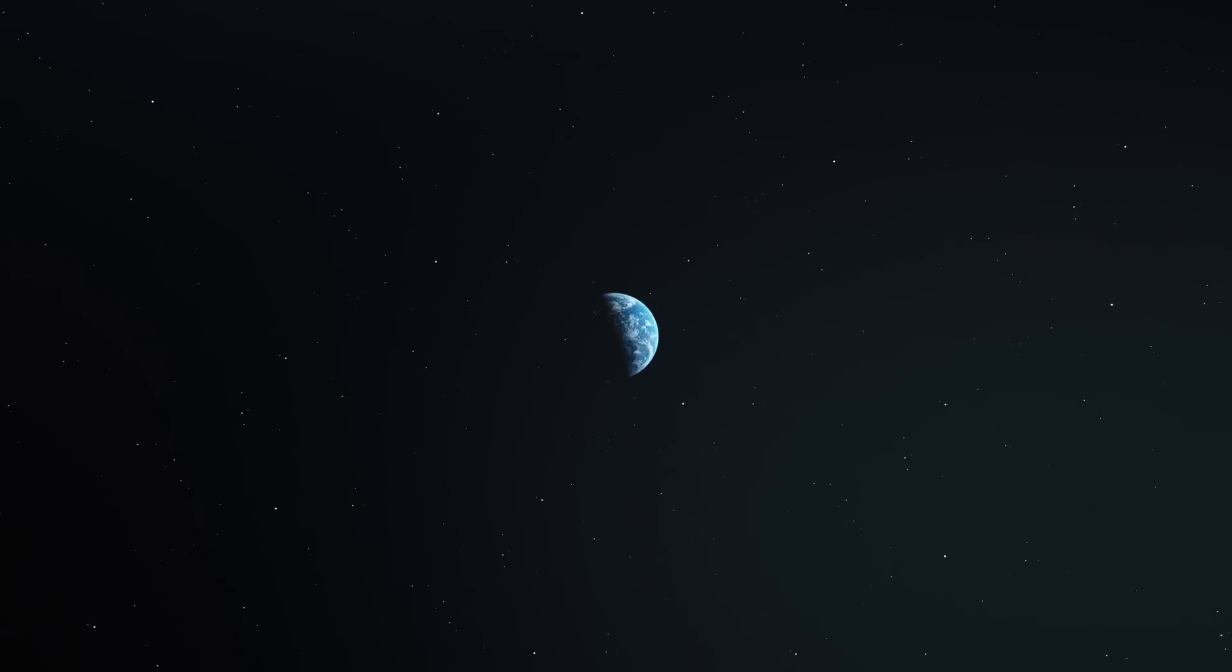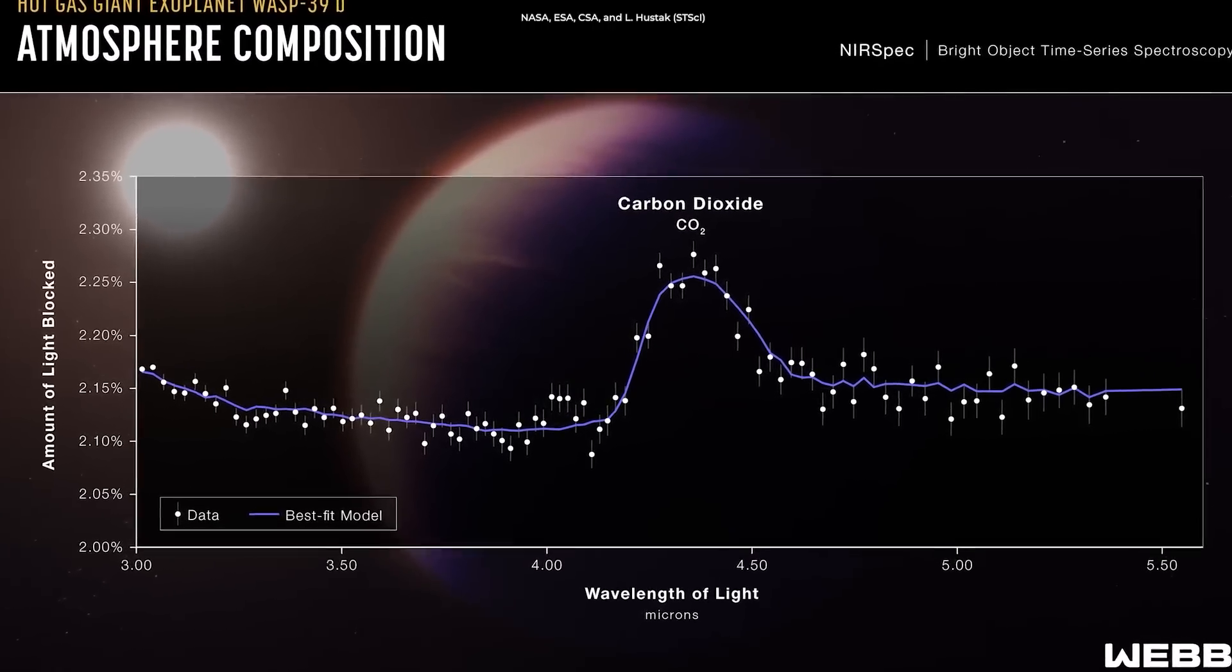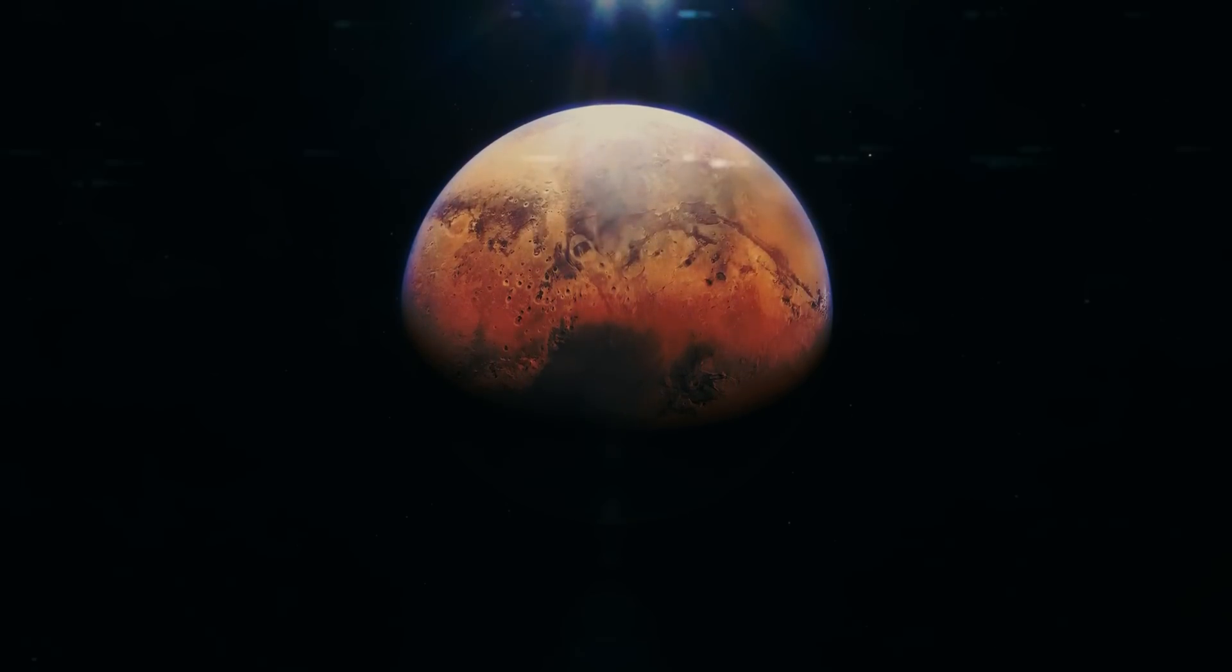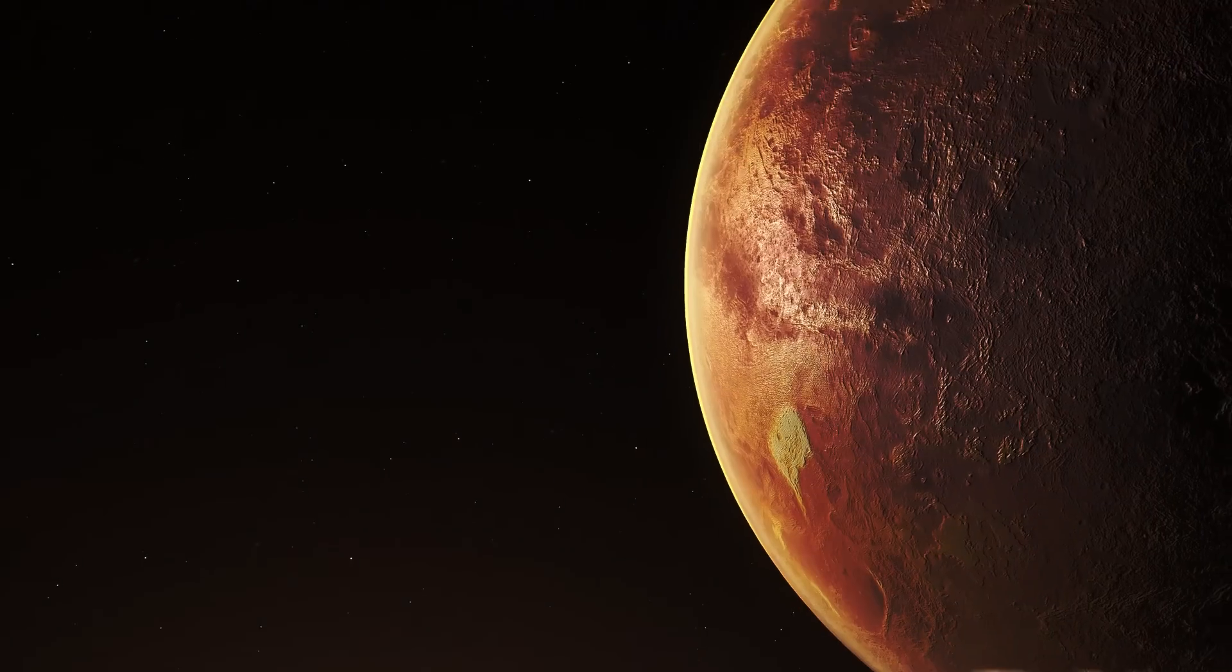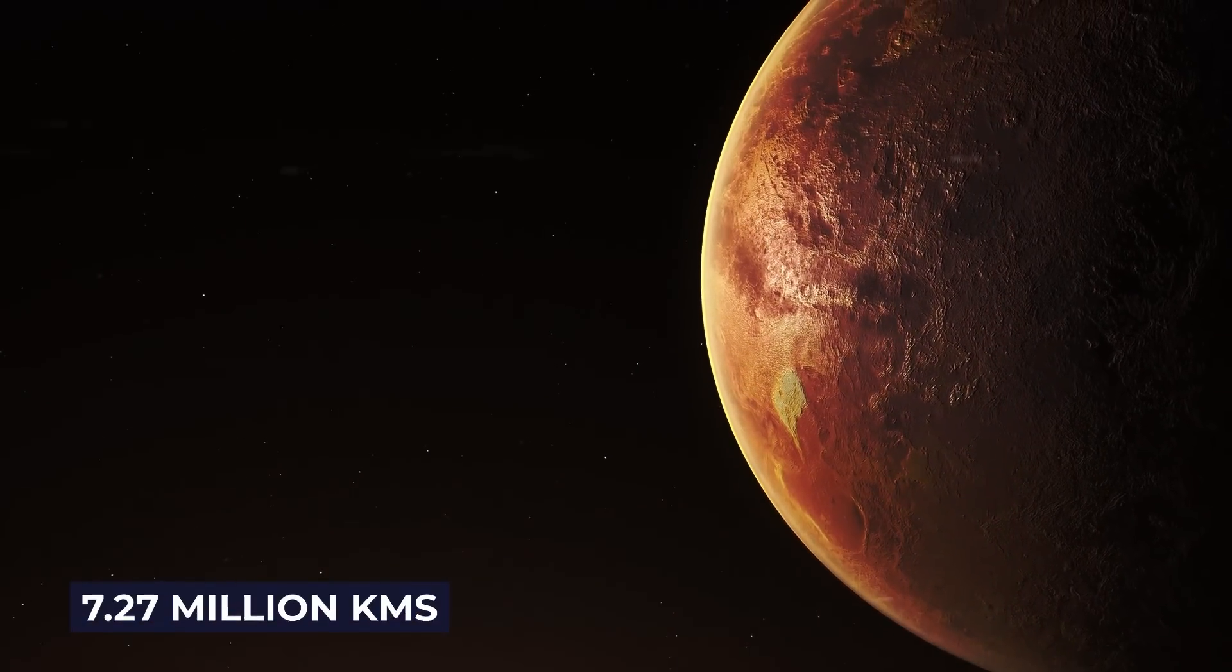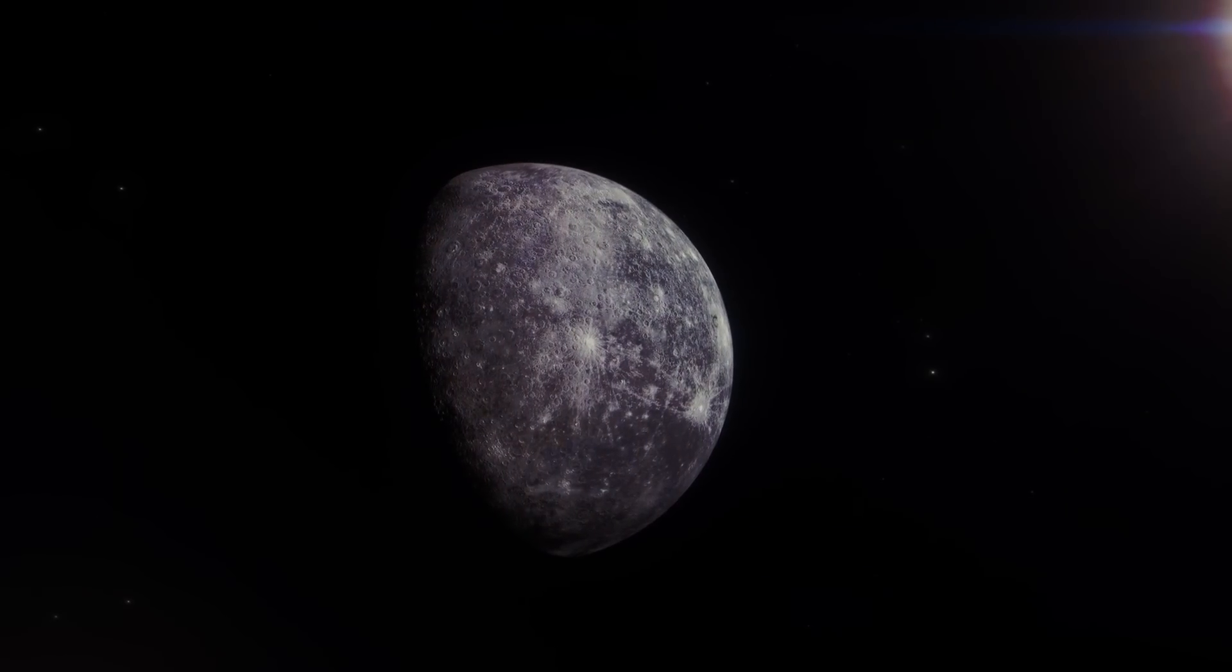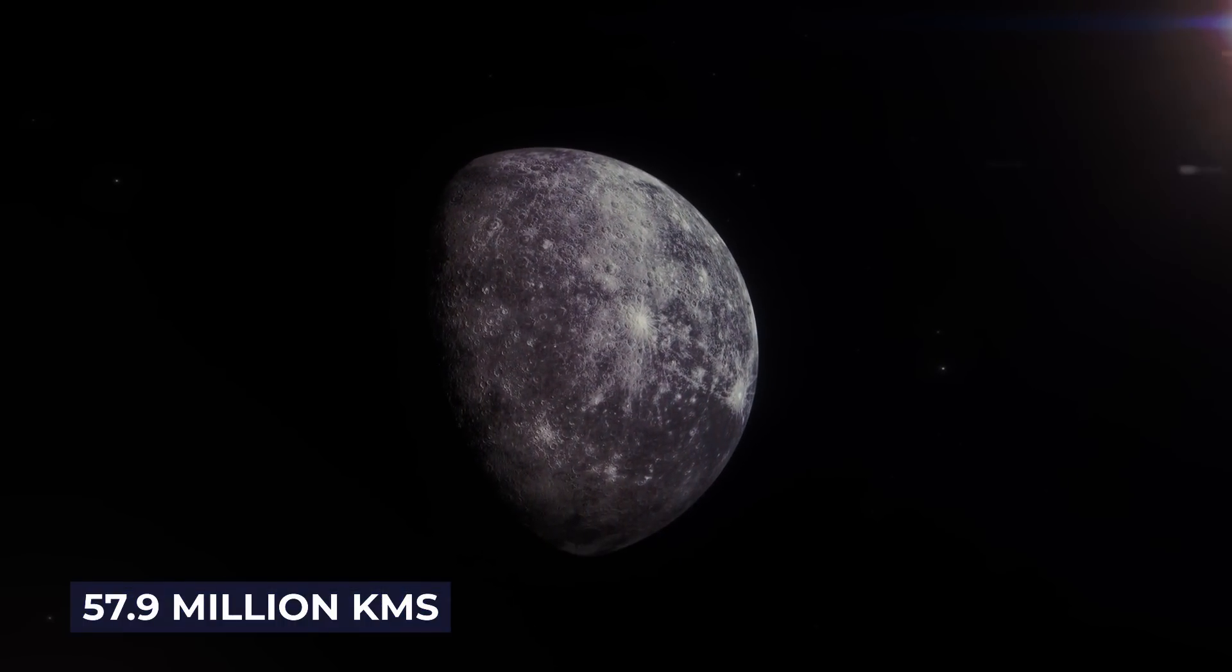for the first time ever in any exoplanet, carbon dioxide were all discovered by JWST's exceptional resolution. It is not a runaway greenhouse effect that causes the planet to glow at 1,650 degrees Fahrenheit, but rather the fact that it is only 7.27 million kilometers from its star. Mercury, in contrast, orbits the sun at a distance of about 57.9 million kilometers.